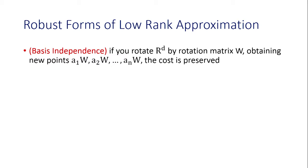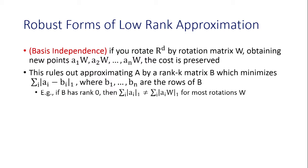What would be a good cost measure for robust low-rank approximation? One natural property is basis independence: if you rotate your points in R^d, the cost function is preserved — i.e., the cost depends on the geometry of the points, not on the particular basis. This rules out some forms of approximation. For instance, approximating A by a low-rank matrix B minimizing the sum of L1 distances between rows does not satisfy basis independence, since the entry-wise L1 norm is not rotation-invariant.